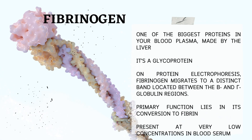Fibrinogen — the clot-forming glue. Fibrinogen is one of the biggest proteins in your blood plasma, made by the liver. It's a glycoprotein, meaning it has some sugar molecules attached. On protein electrophoresis, fibrinogen migrates to a distinct band located between the beta and gamma globulin regions. Fibrinogen's primary function lies in its conversion to fibrin, an insoluble protein essential for clot formation. Fibrin polymers form a mesh-like structure that traps blood cells and platelets, effectively sealing wounds and preventing blood loss. Because fibrinogen is actively consumed during clot formation, it is typically absent or present at very low concentrations in blood serum.